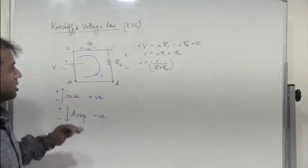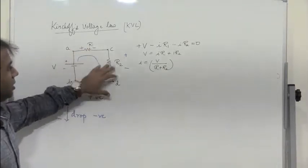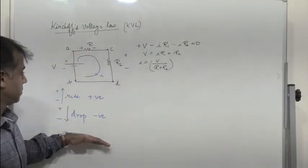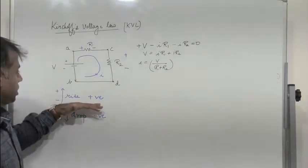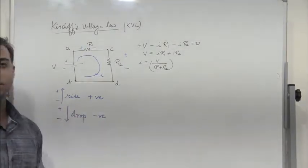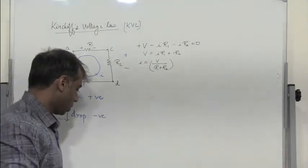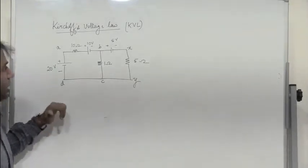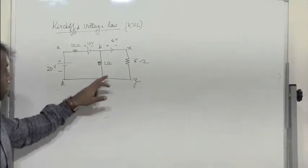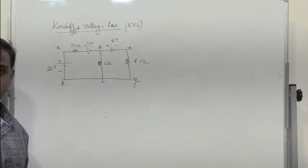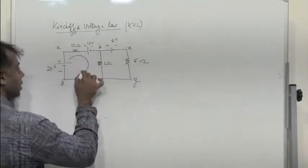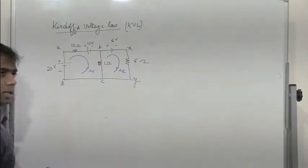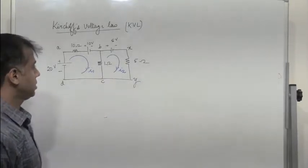We can write the KVL for any given circuit easily using this notation where rise in potential is positive and drop in potential is negative. Let us take a problem. The circuit is given and we need to find the current flowing through the 5 ohm resistor. The current flowing in the first loop is I1 and the current flowing in the second loop is I2.